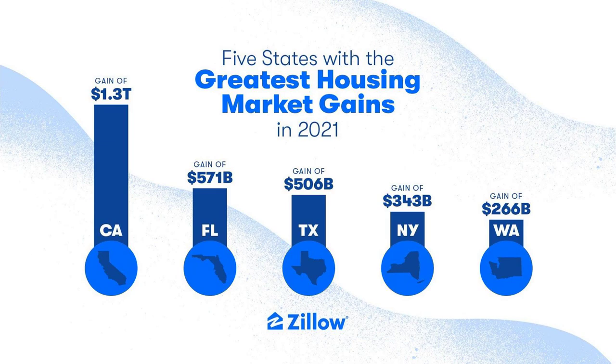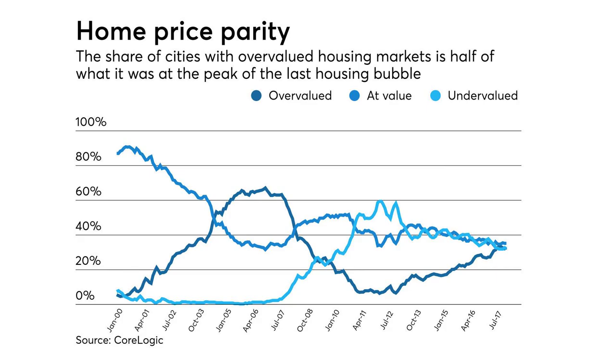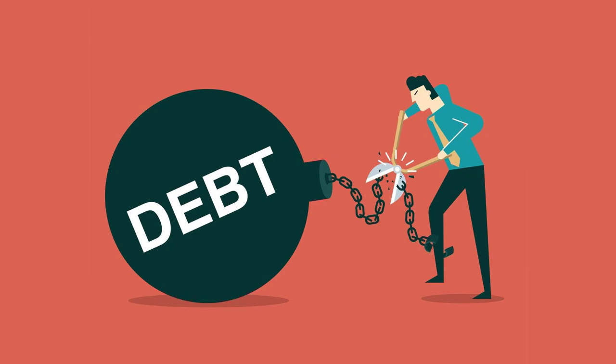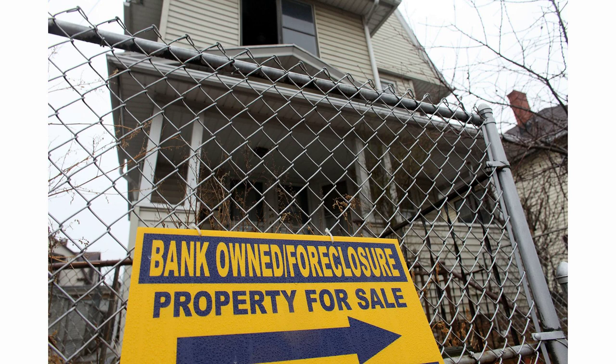Housing Bubble: One of the primary causes of the Great Recession was the housing bubble. During the early 2000s, there was a surge in housing prices, which led to a housing bubble. Banks and other financial institutions were lending money to people who could not afford to pay back their loans. This led to a rise in subprime mortgages, which were high-risk loans given to people with poor credit histories.